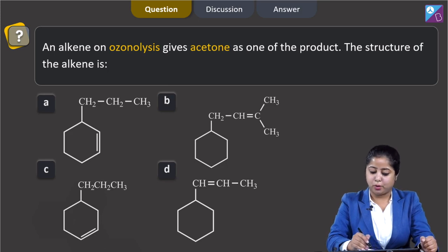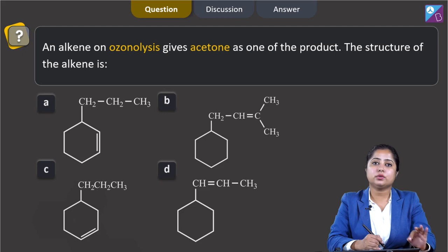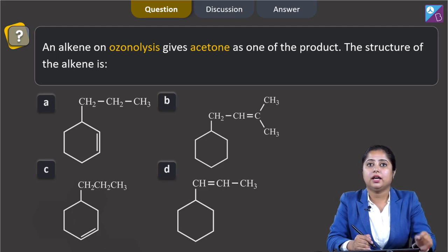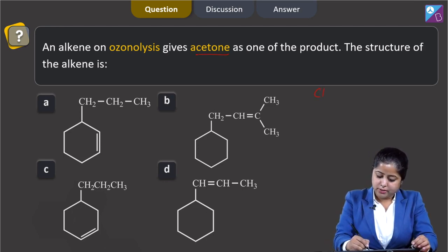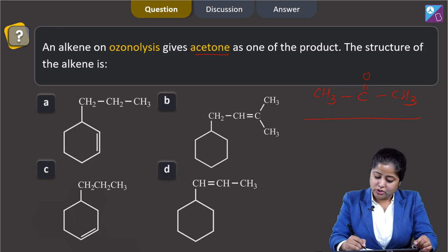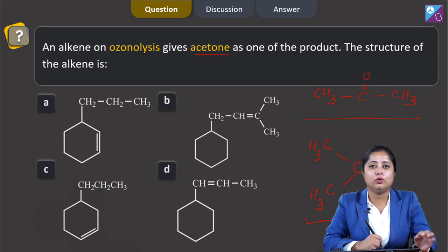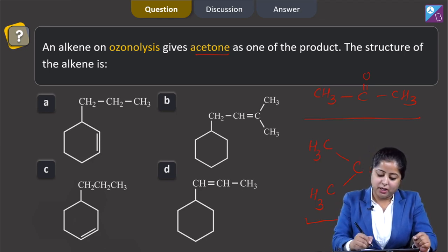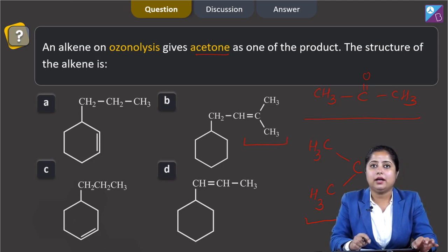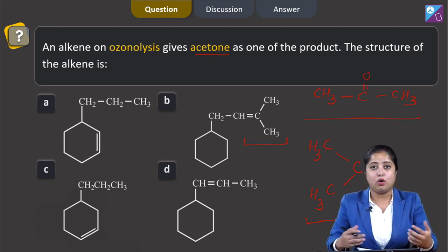Moving to the next question. An alkene on ozonolysis gives acetone as one of the products - what is the structure of the alkene? We are given with 4 alkenes and we have to identify the one which on ozonolysis gives acetone as one of the products. We need to know the structure of acetone: CH3-C(=O)-CH3. So an alkene which has the group CH3-C(=CH2)-CH3 will give acetone on ozonolysis. Among the given options, only option B has this group.